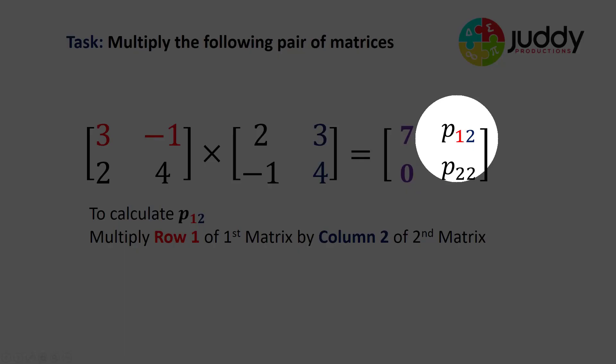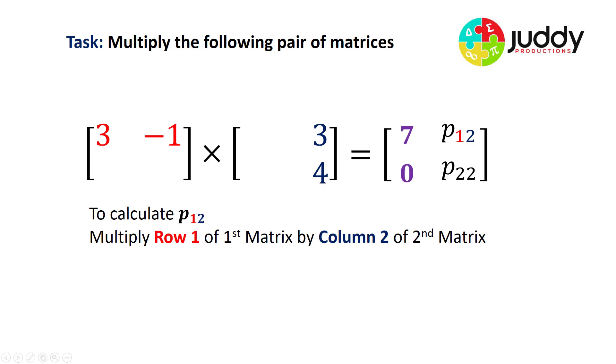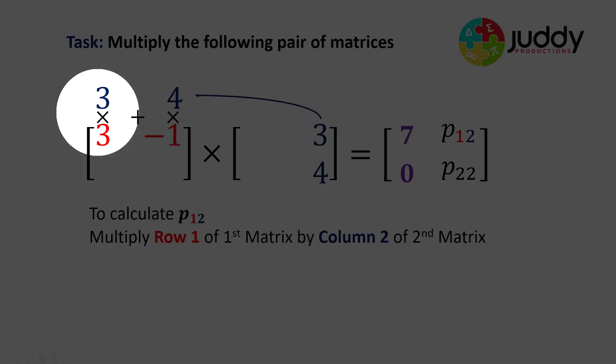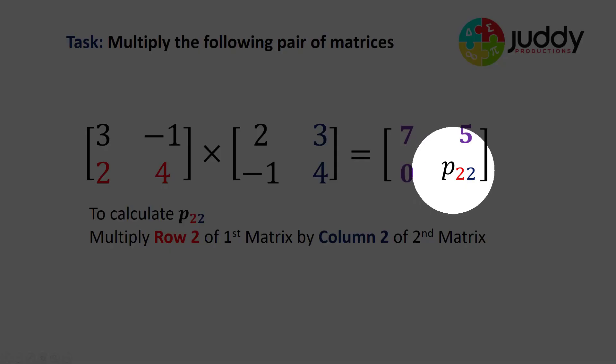We continue on, and we now want to work out the element P12, which uses the first row of matrix one and the second column of matrix two. Remove all the other distracting elements. Rotate that column two across above row one and multiply the terms. Three by three and four by minus one. And we add those products together. We end up with a value of five.